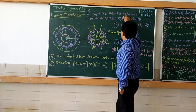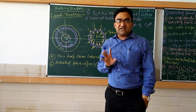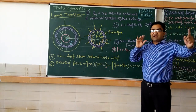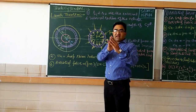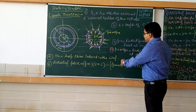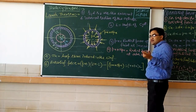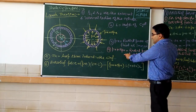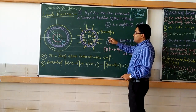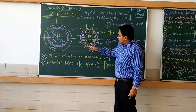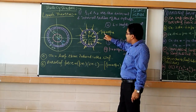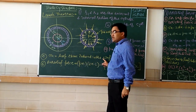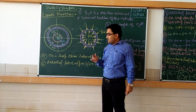Point one: R1 and R2 are the external and internal radii of the cylinder. Point two: L is the complete length of the cylinder. Point three: Px is the radial pressure of the fluid inside the cylinder, acting along the radius. Point four: Px plus dPx is the radial pressure at the outer periphery of this ring. Point five: sigma_x is the hoop stress induced into this ring.